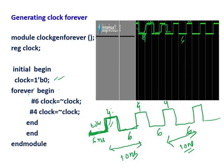Whatever we have to write inside the forever, we only write inside the forever block. There are no conditions, because once the forever loop is encountered, it runs continuously, it runs forever. So this is one example, and another example is generating a clock forever.